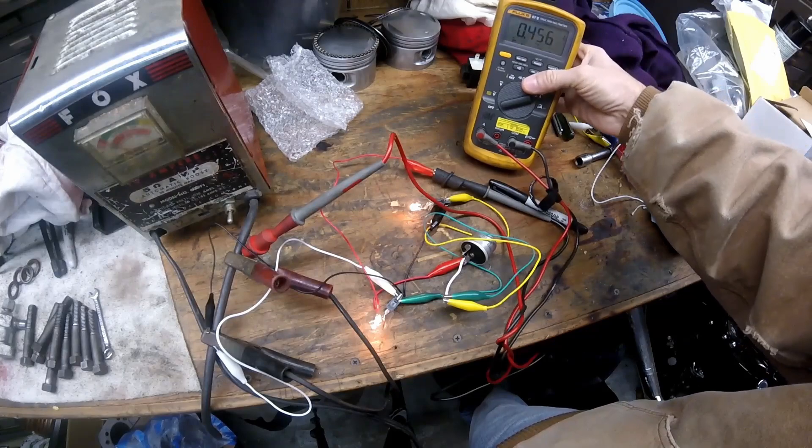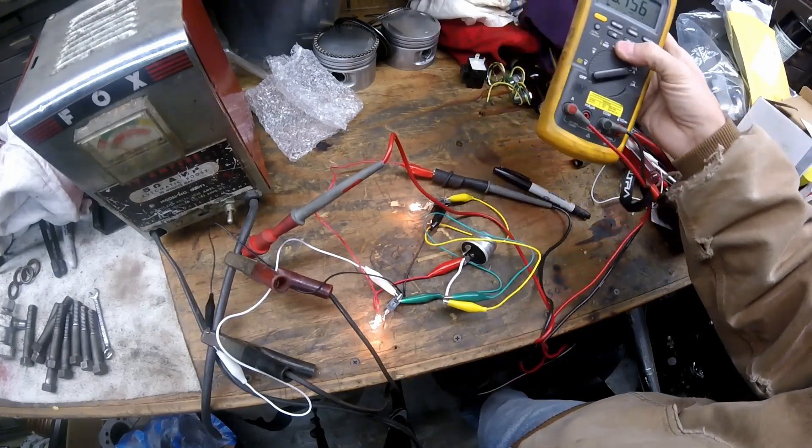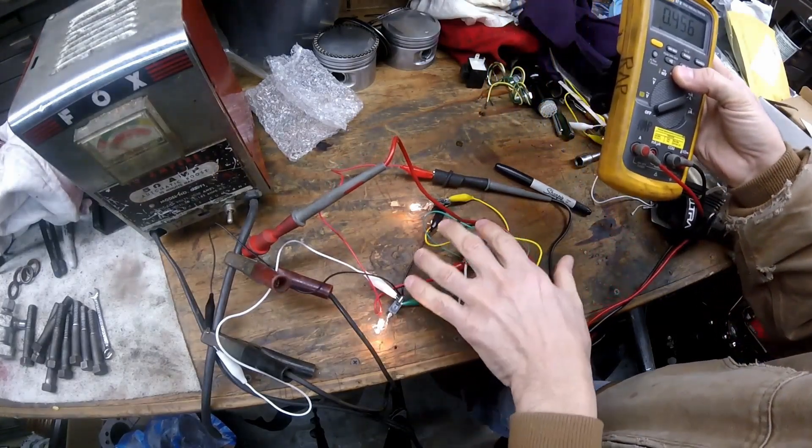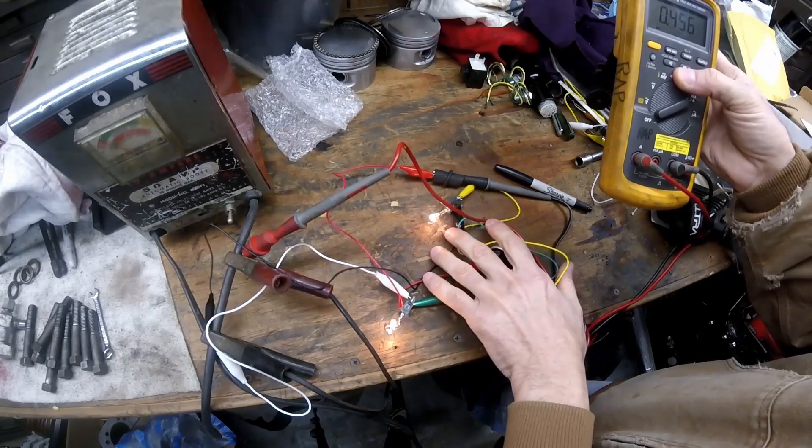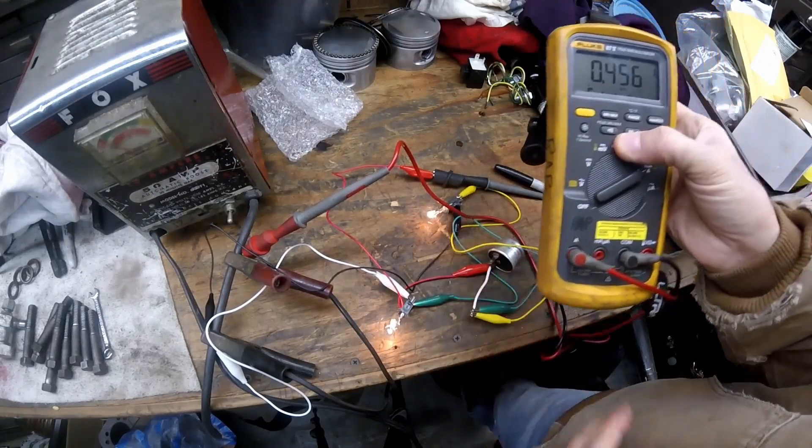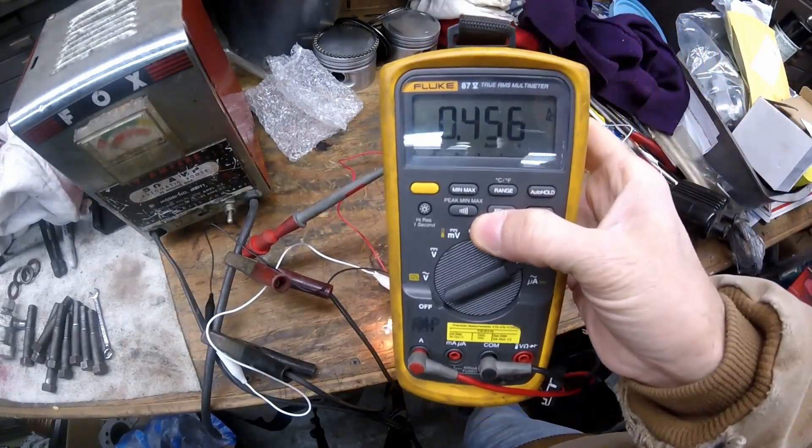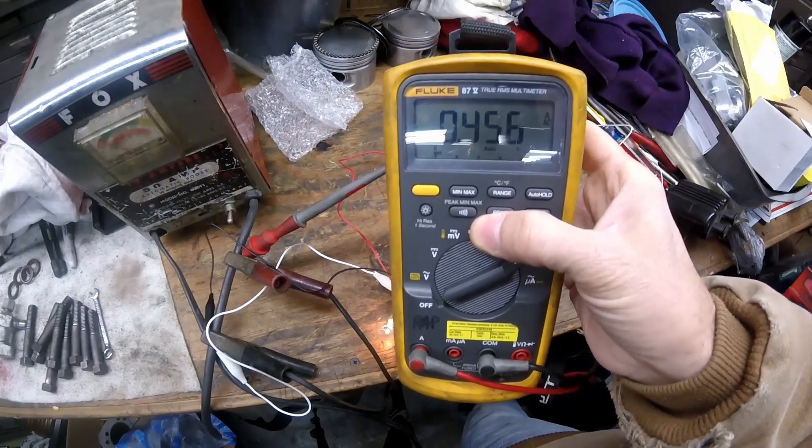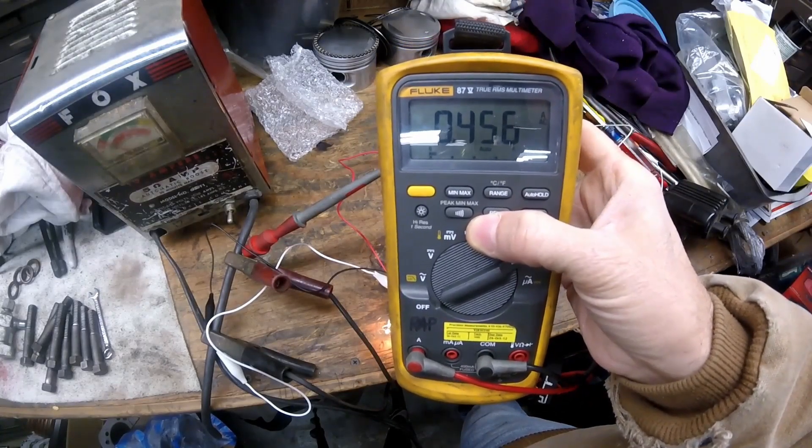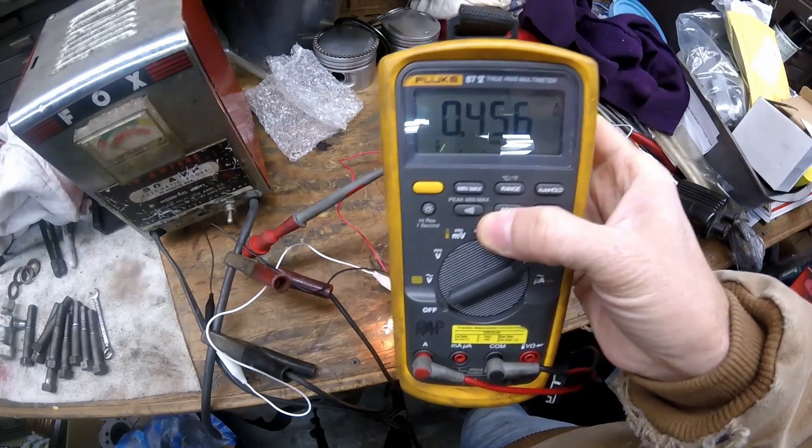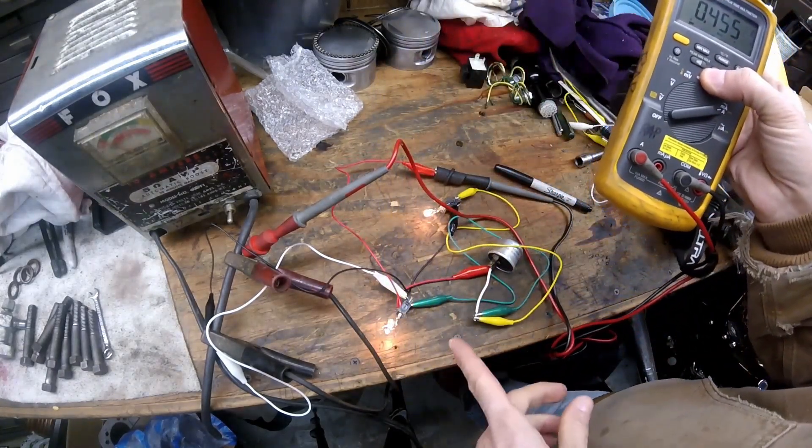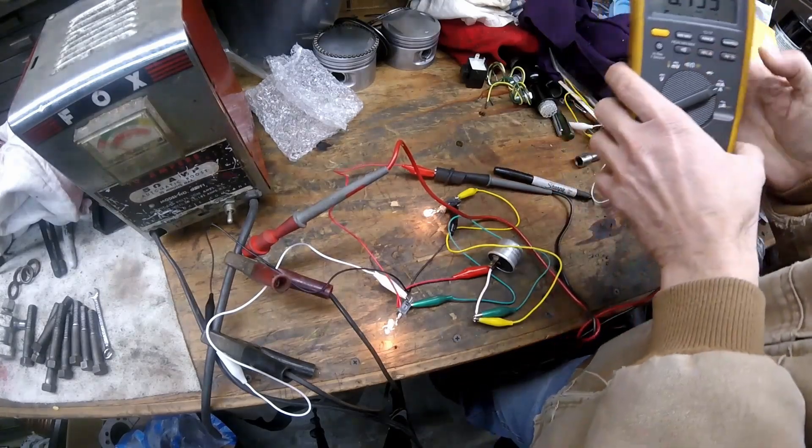First thing we're going to look at with this is the two incandescent bulbs are lit. And right now I'm not using the flasher relay. I'm wired direct. But I wanted to show you the amps that it draws. It draws 0.456 of one amp. So just under a half of an amp to light the two turn signals on these two incandescent bulbs.